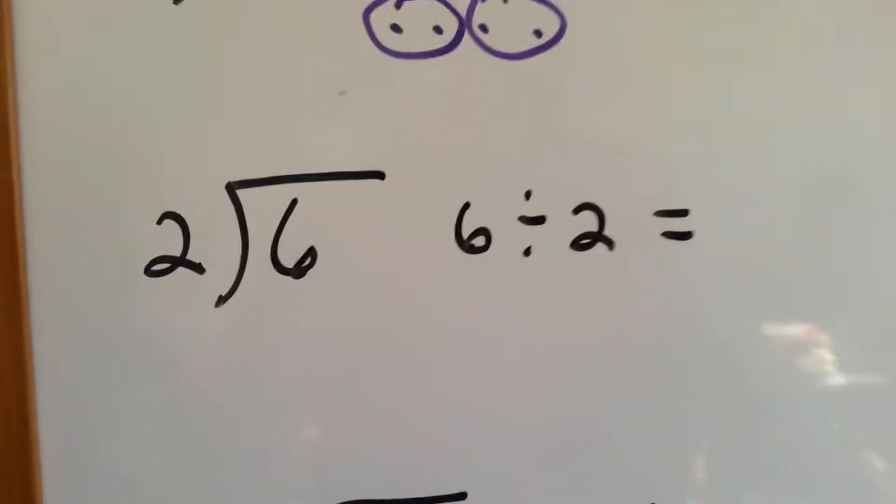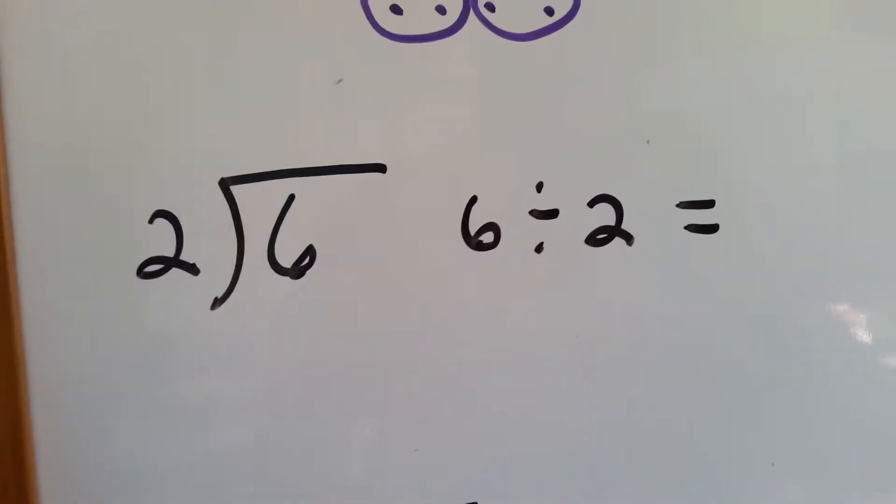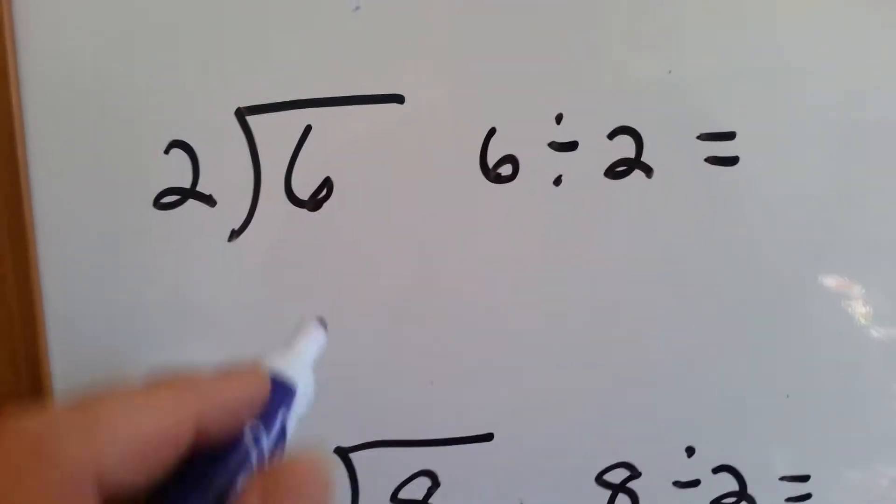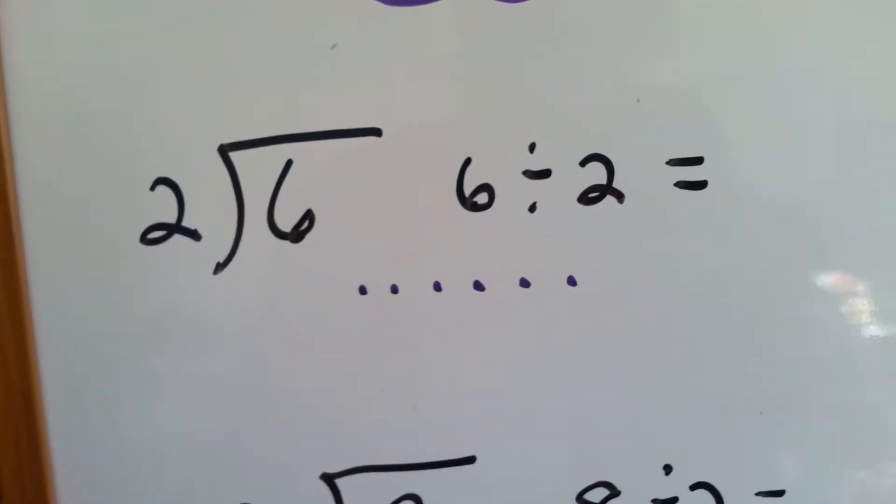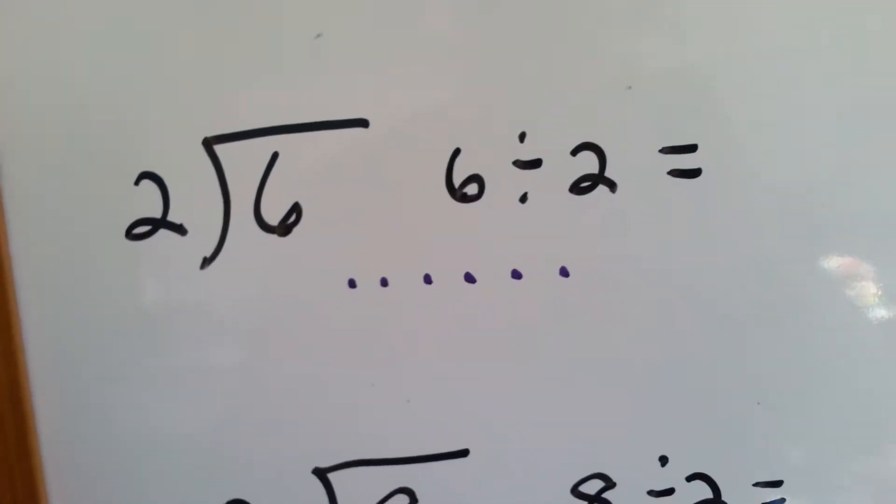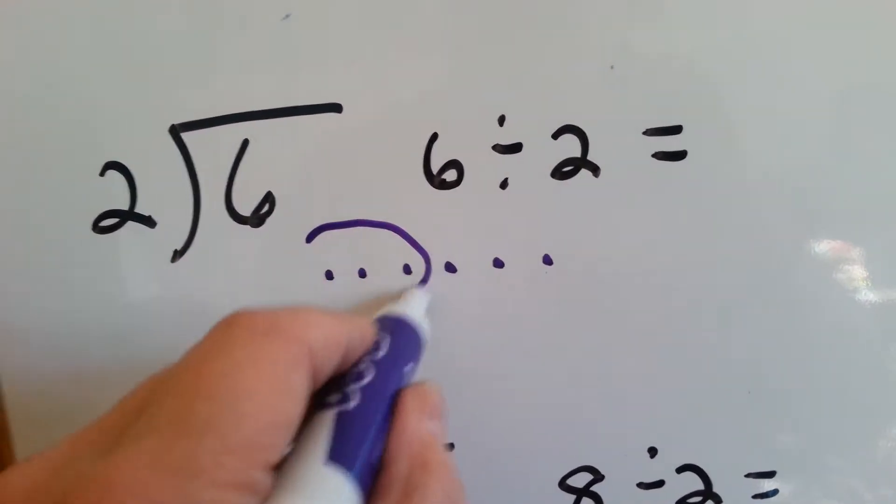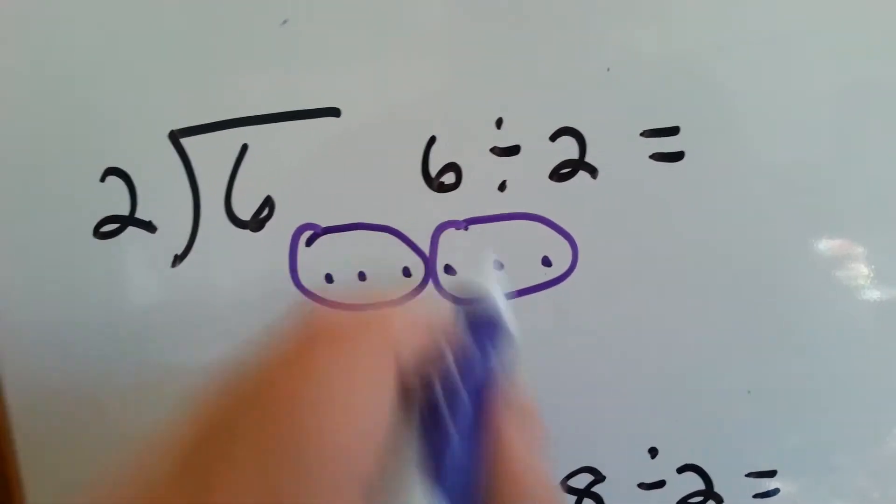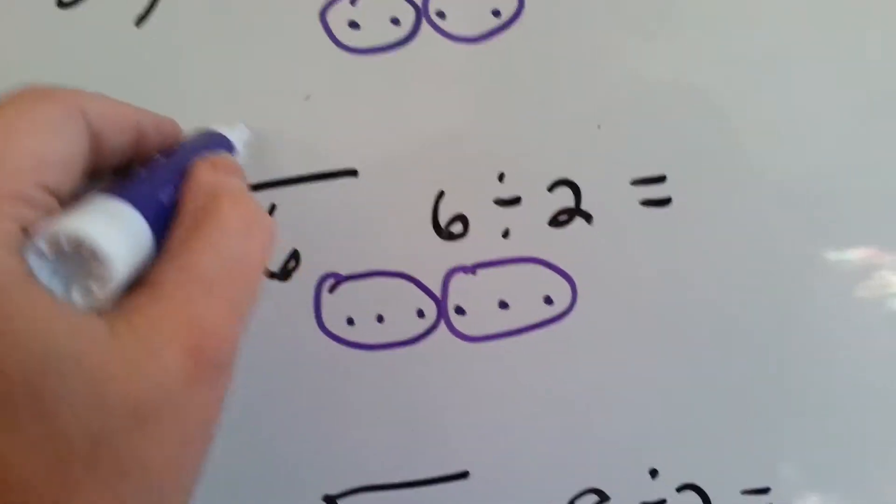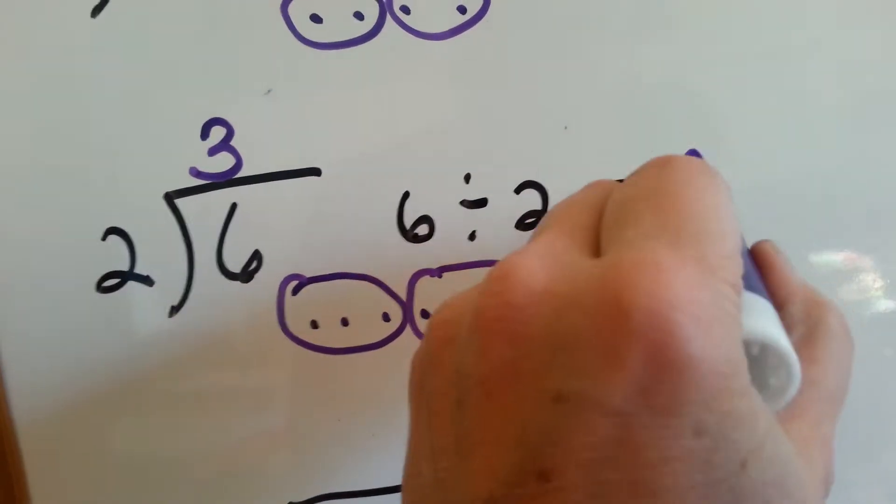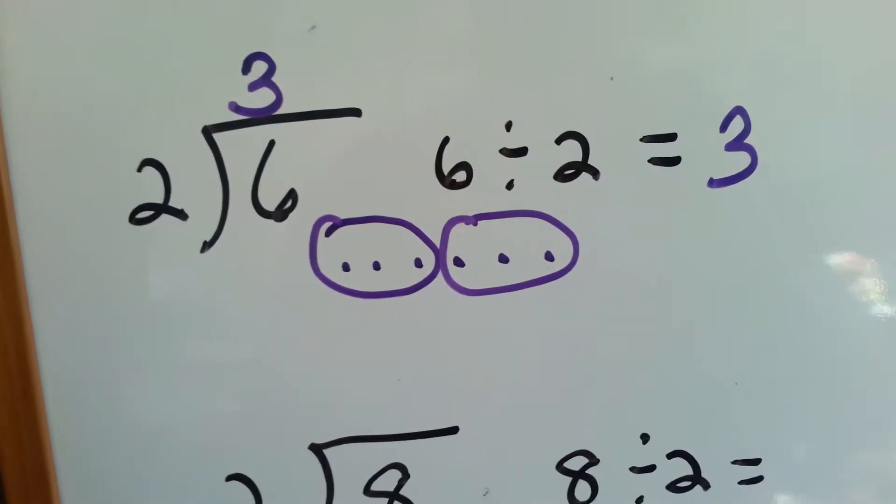Let's try this one. 6 divided by 2. We're going to make 2 groups. Here's group 1, and here's group 2. How many are in each group? 3. So 6 divided by 2 is 3.